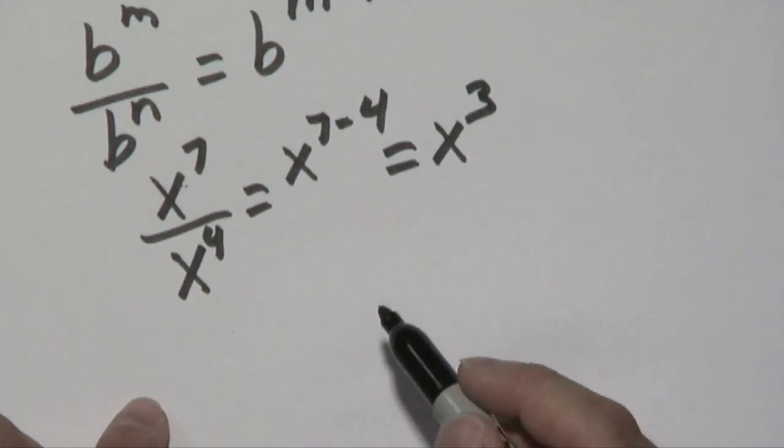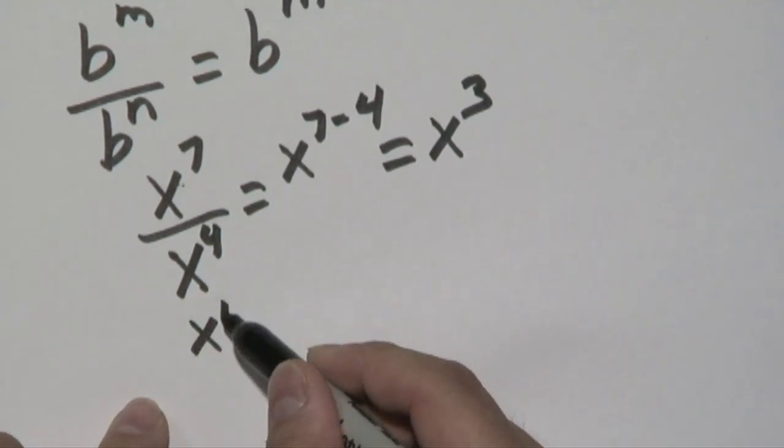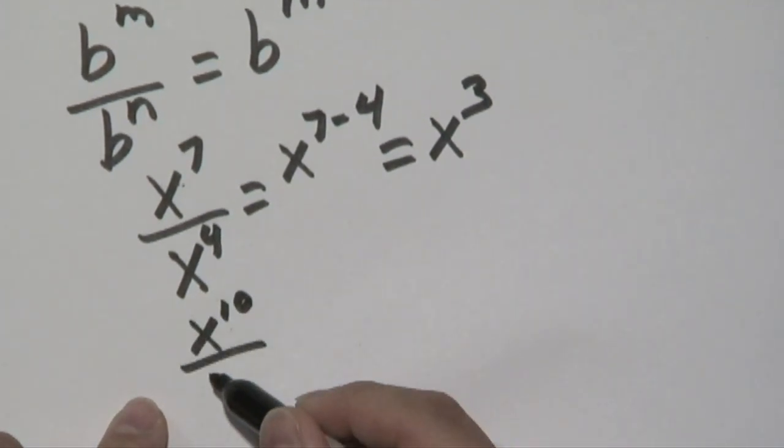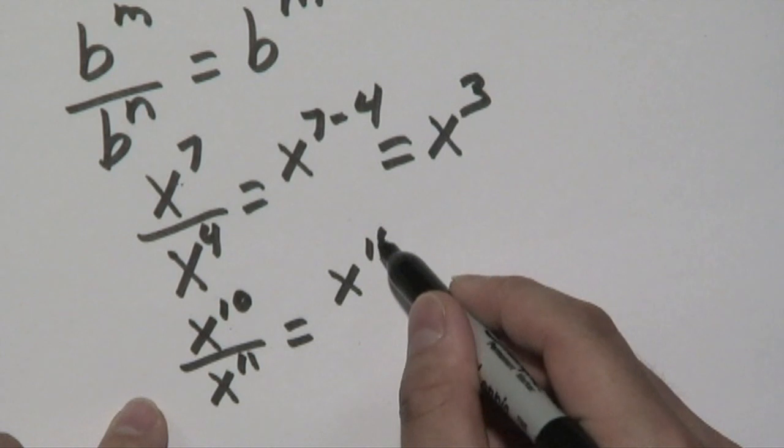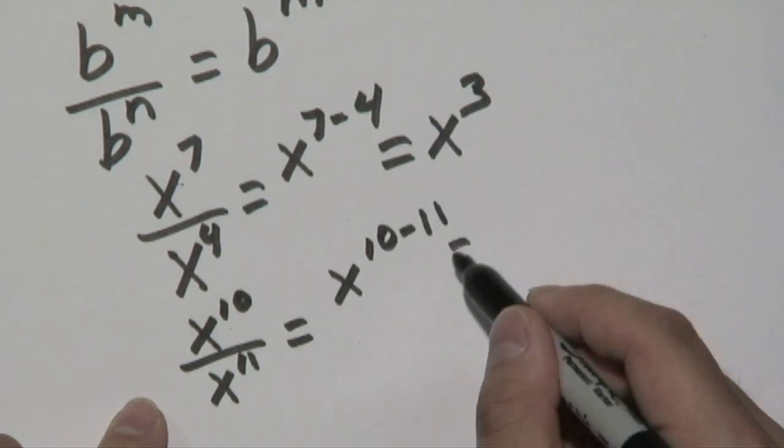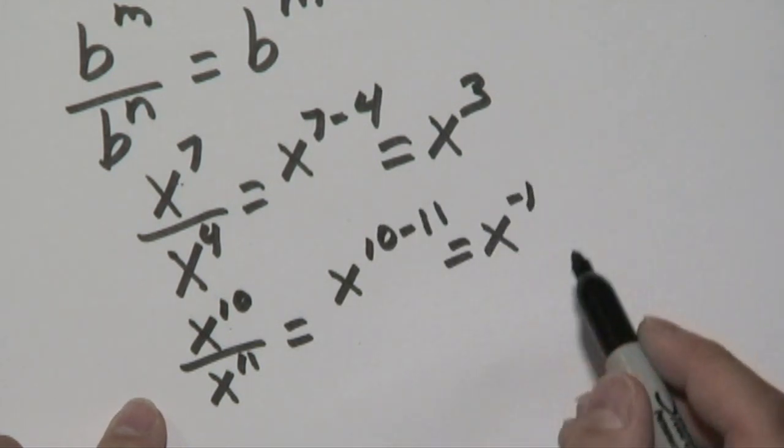Now similarly, if you have x to the 10th over x to the 11th, division there, again making sure the bases match, you have x to the 10 minus 11, which is going to be x to the negative 1 power.